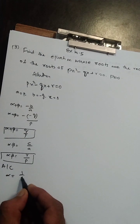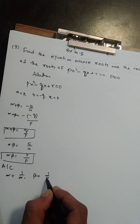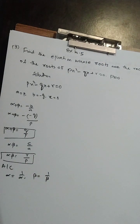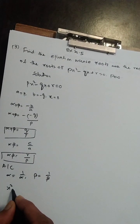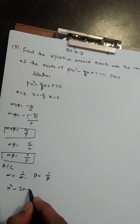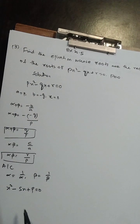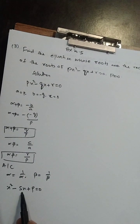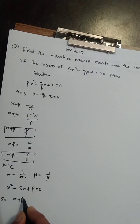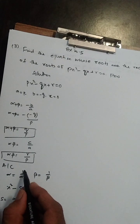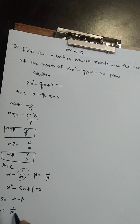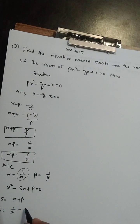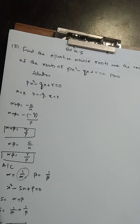According to condition: find the equation whose roots are reciprocal of the roots. Reciprocal of roots ka matlab hai alpha* = 1/alpha aur beta* = 1/beta. Equation banane ke liye hume sum aur product chahiye. Sum ka formula hai alpha* + beta* = 1/alpha + 1/beta. Neeche walon ka LCM alpha into beta hoga.